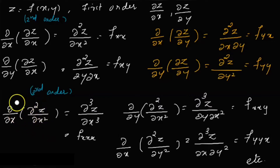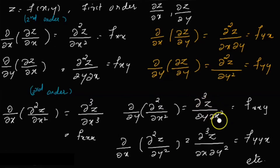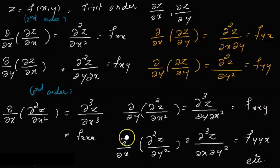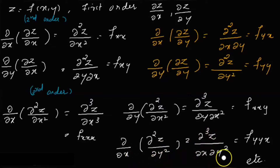For example, if you differentiate dou square z by dou x square again with respect to x, you get dou cube z by dou x cube. Another example: dou by dou x of dou square z by dou y square equals dou cube z by dou x dou y square. This means differentiate f with respect to y, again with respect to y, then with respect to x. Similarly, we can find different third-order partial derivatives.